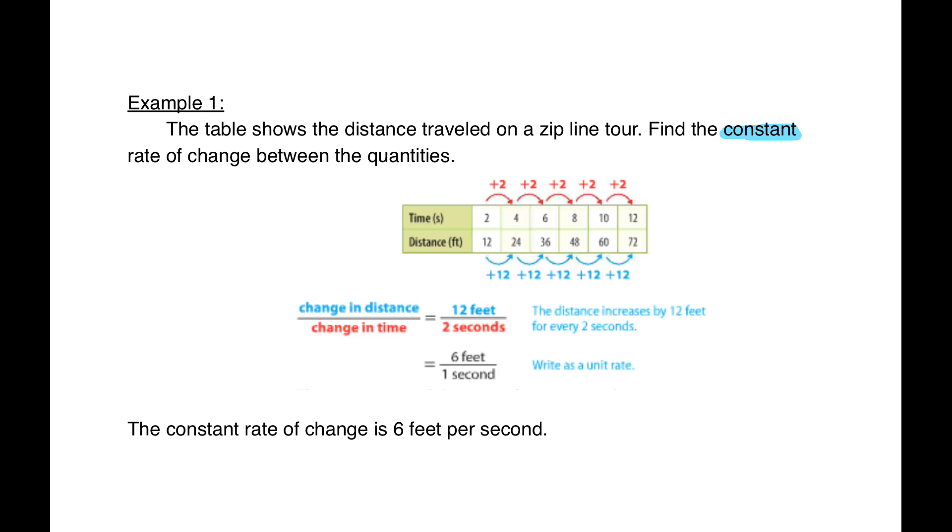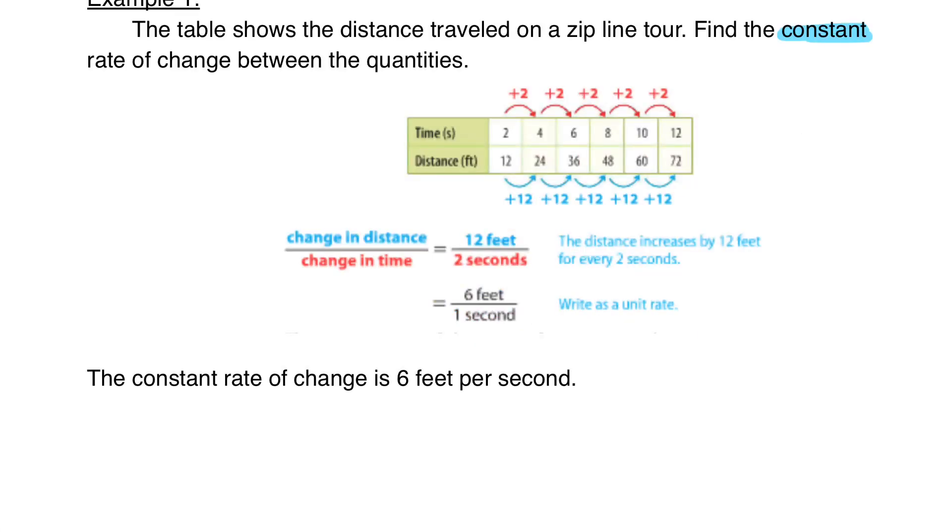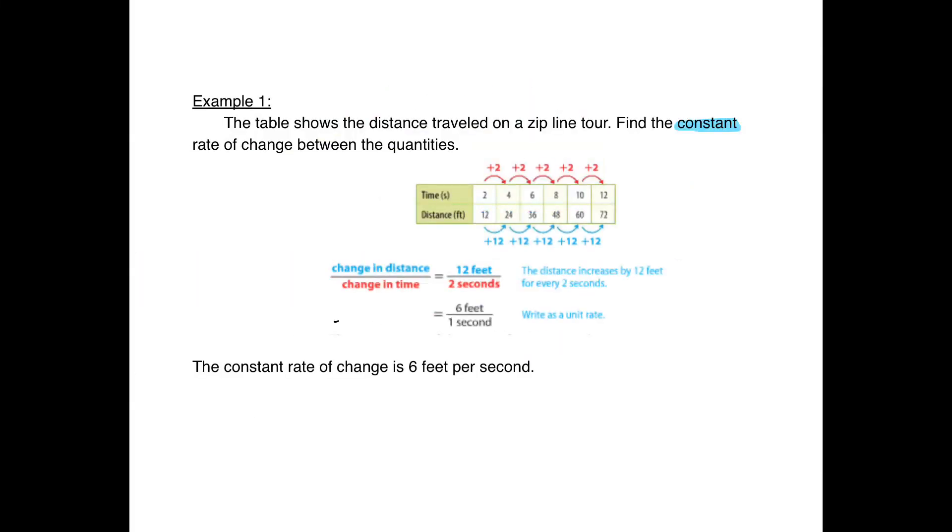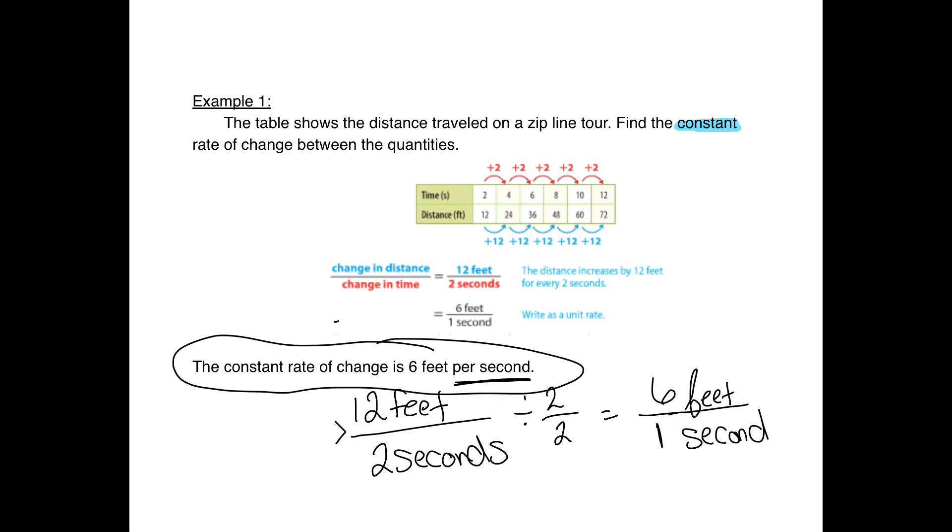In our chart we're going to put 12 feet over 2 seconds. You want to simplify this - you can either divide, because a fraction bar means divide, or simplify it the old way. You'll end up with 6 over 1, so it's going to travel 6 feet in 1 second. When they're talking about unit rate, it wants it to be for 1 second, or whatever your unit is - seconds, minutes, hours.